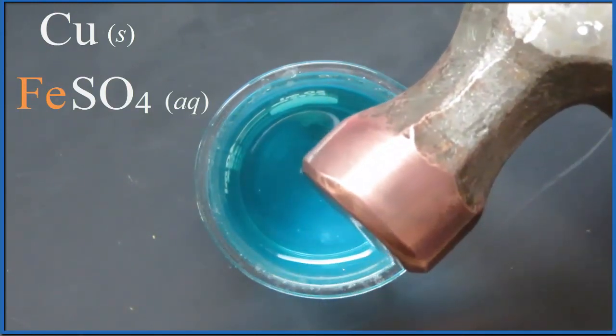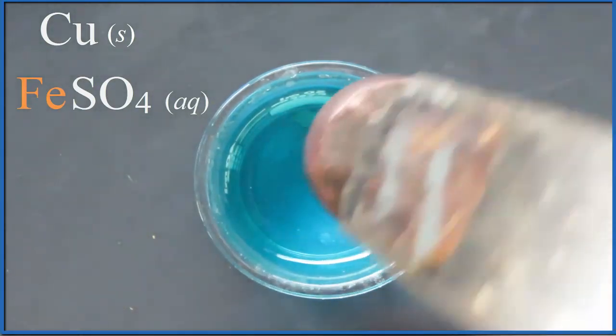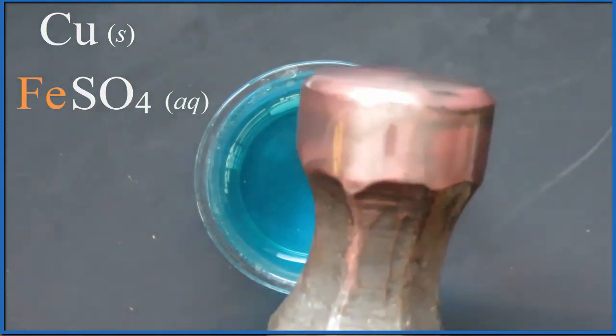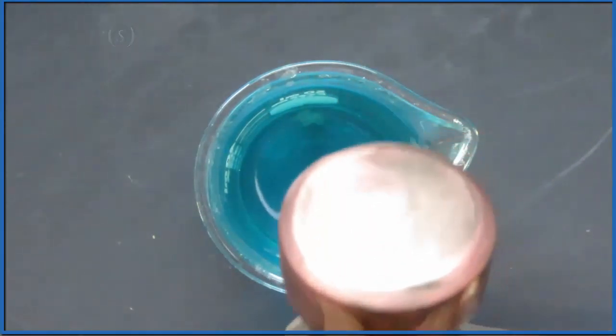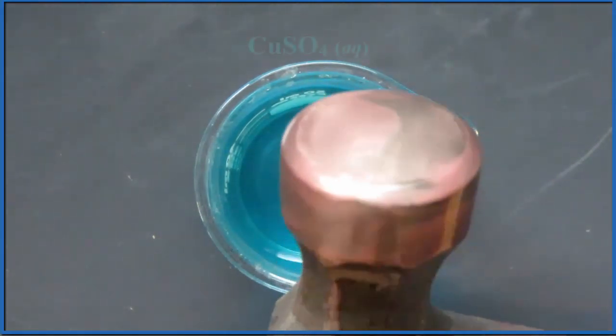So the iron, it's replacing the copper. We start out with this copper sulfate dissolved in water, that's the blue. And the iron from the hammer, that replaces some of the copper in that blue solution in the beaker.